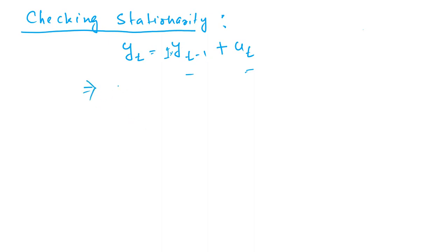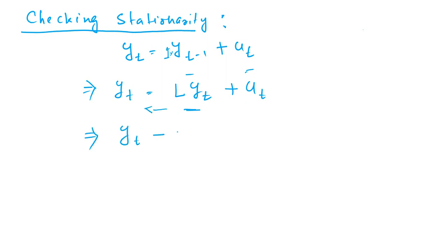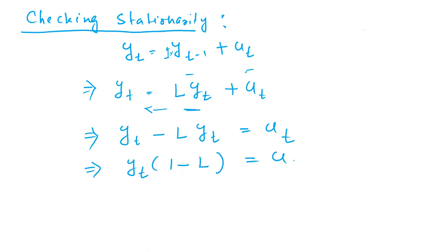This can be written as: yt equals the lag of yt. So yt minus 1 is L times yt, plus ut. I will take this term to the left-hand side, and then I will have yt minus L of yt equal to ut.